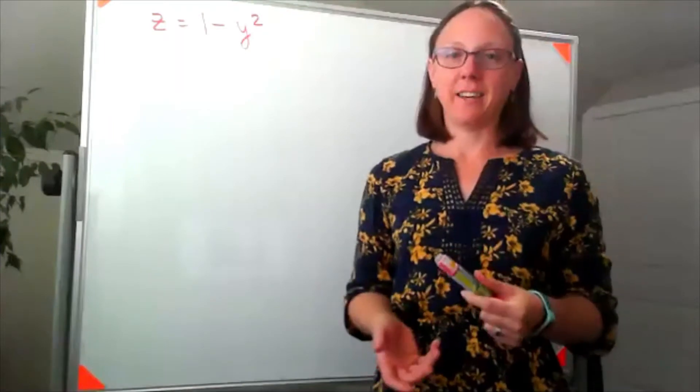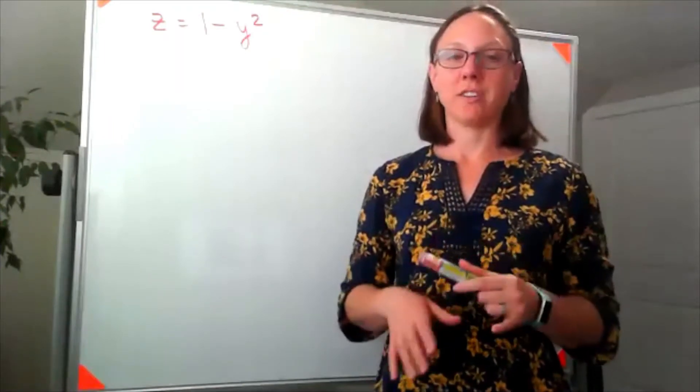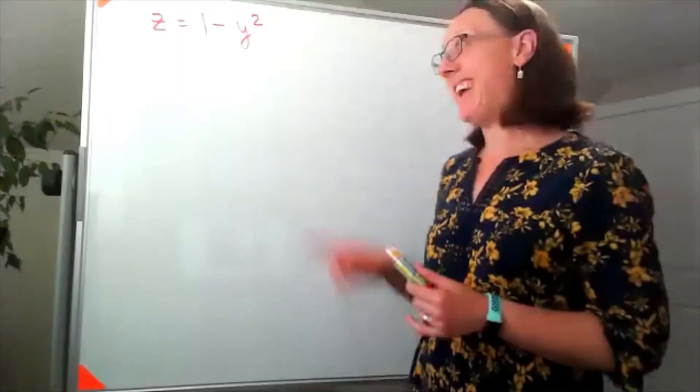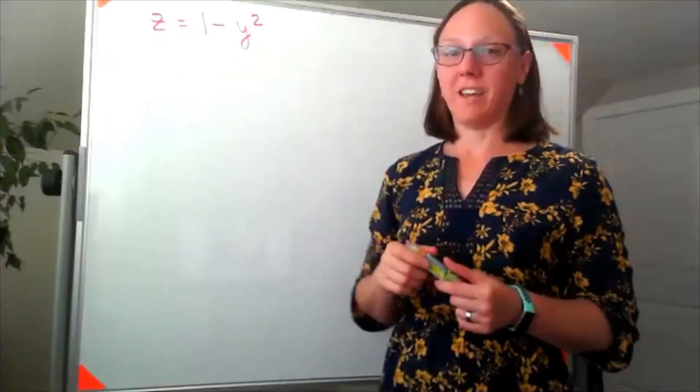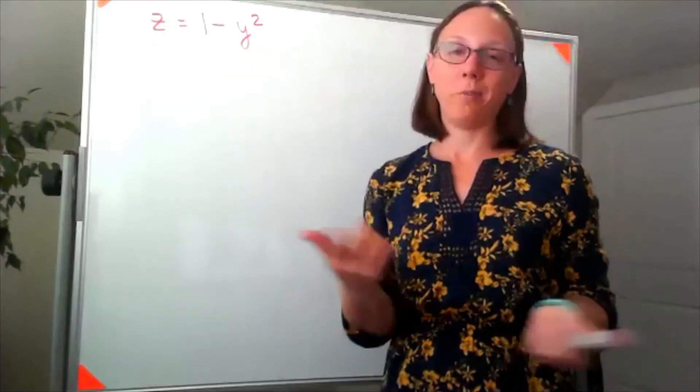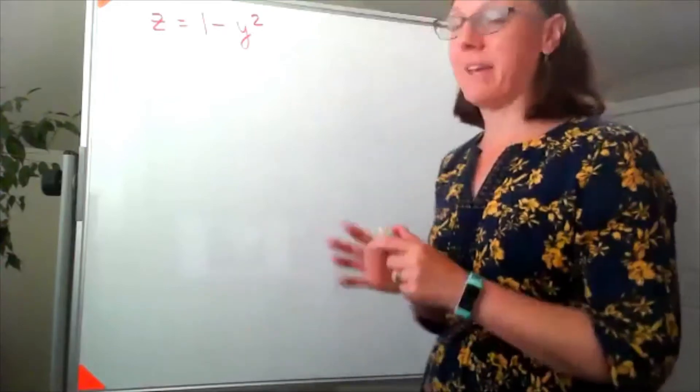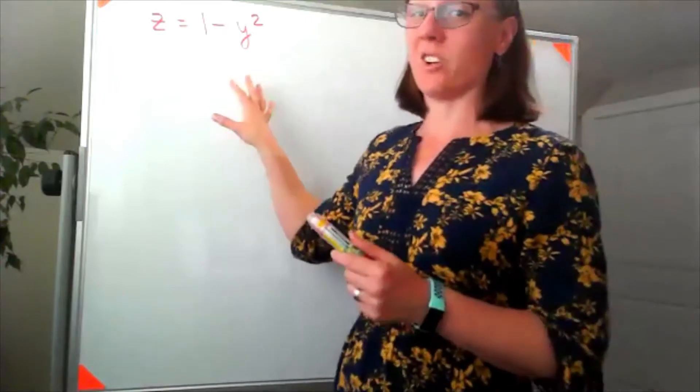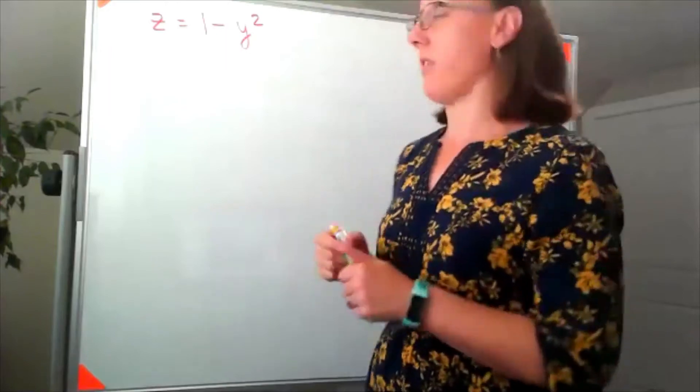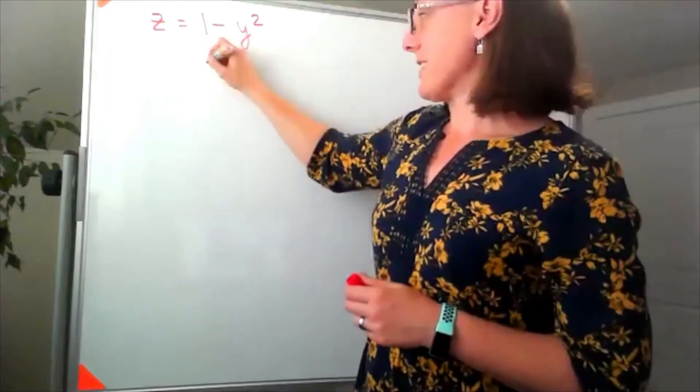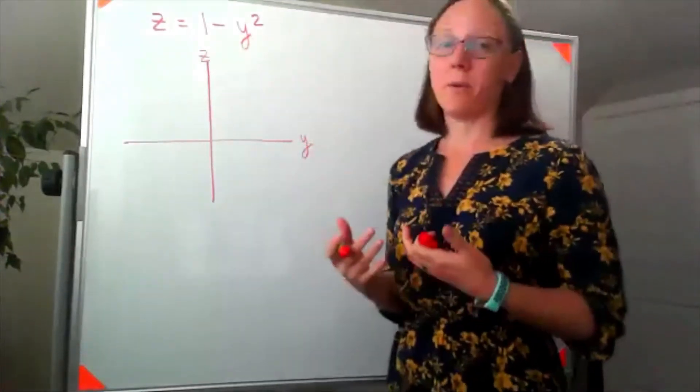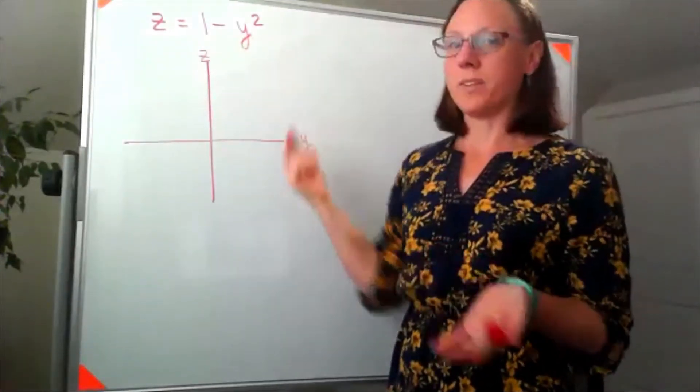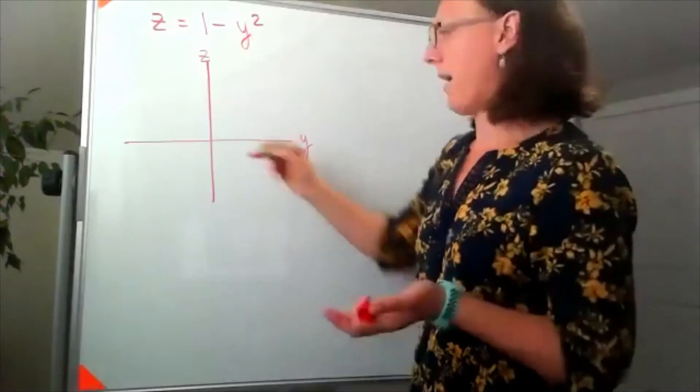So if I were graphing this in 3D, I would actually start by graphing it in 2D, meaning I'm only going to worry about the Z and the Y, because those are the only variables I have. But even if I had X's, I would still start this way. So I'm thinking about graphing this where Z is my vertical axis and Y is my horizontal axis, so I know what this graph looks like. It's an upside-down parabola.